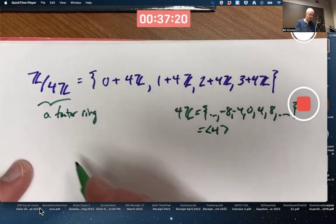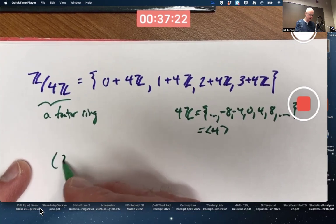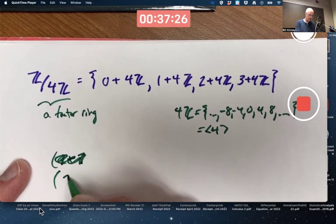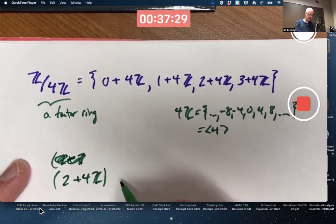So the example done in the book, let's work through it, is to take 2 plus 4Z, that left coset, first and add 3 plus 4Z.